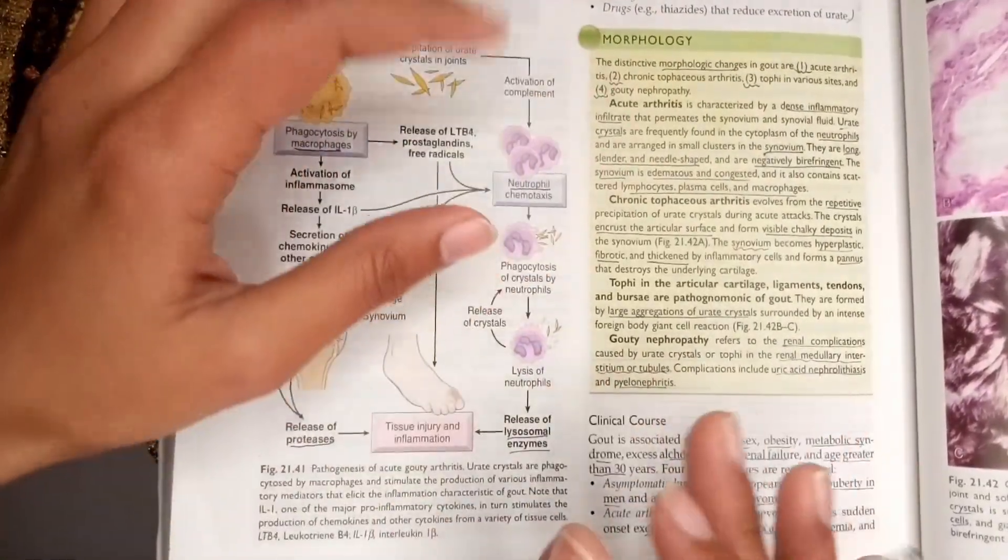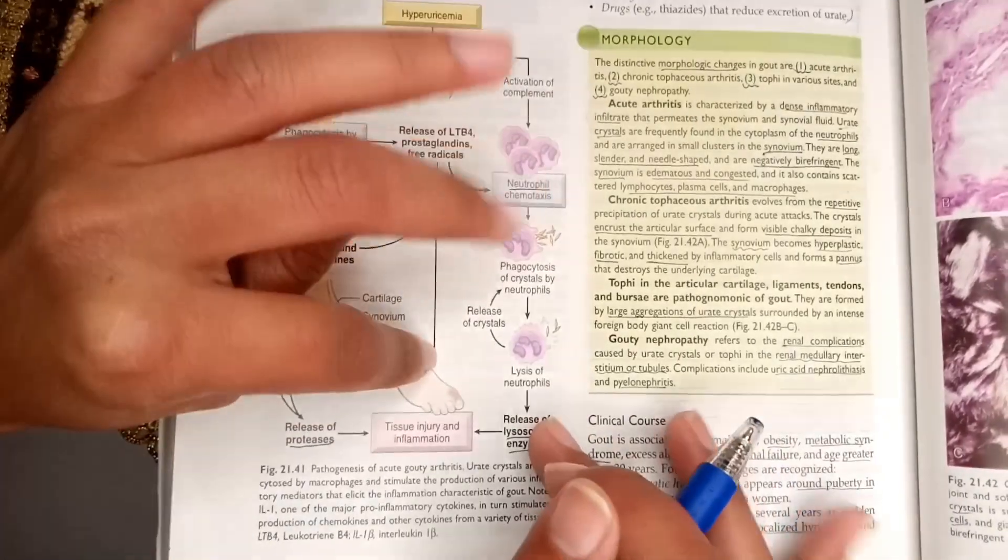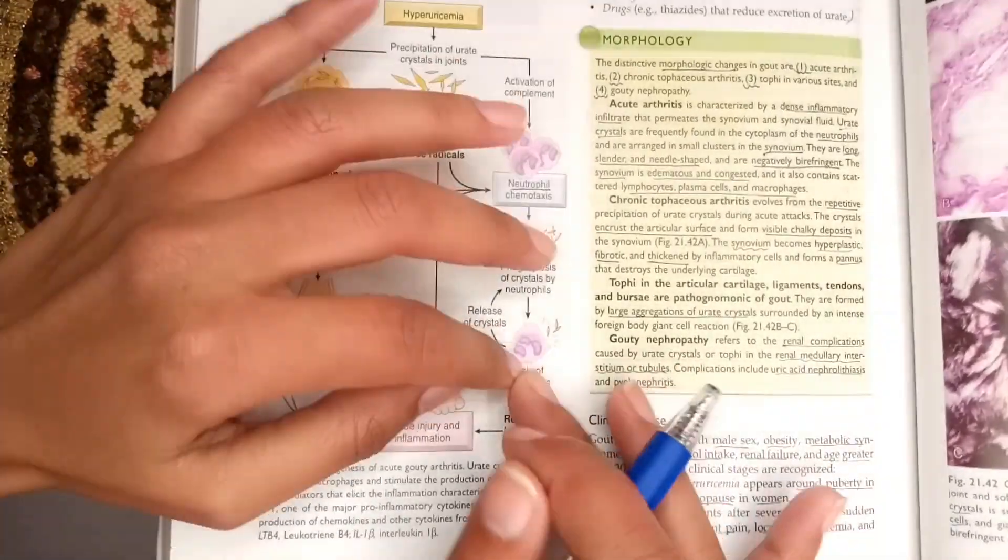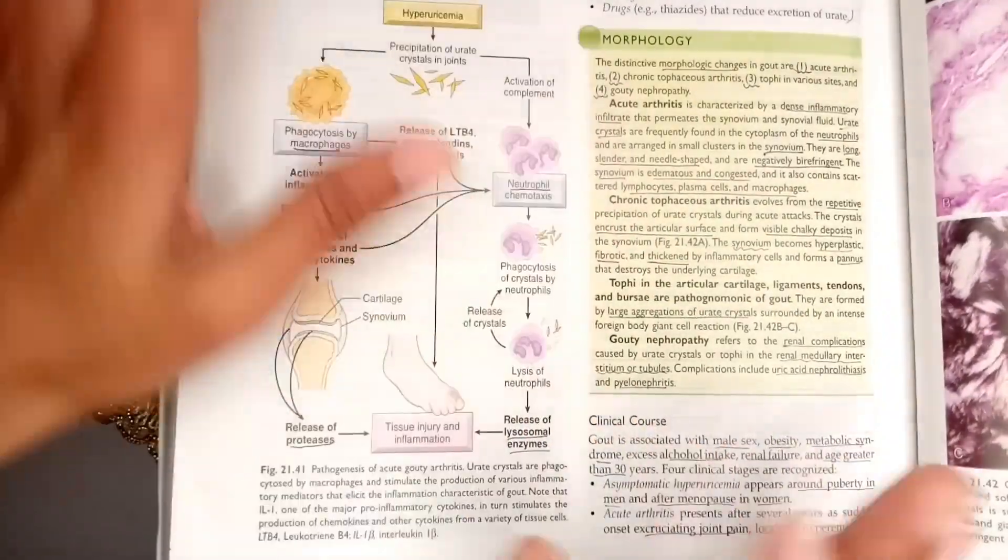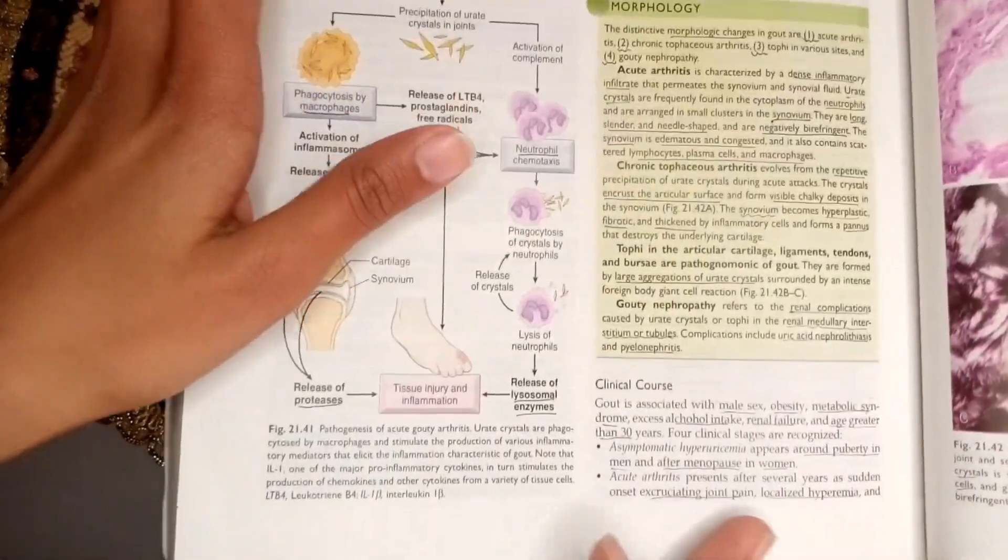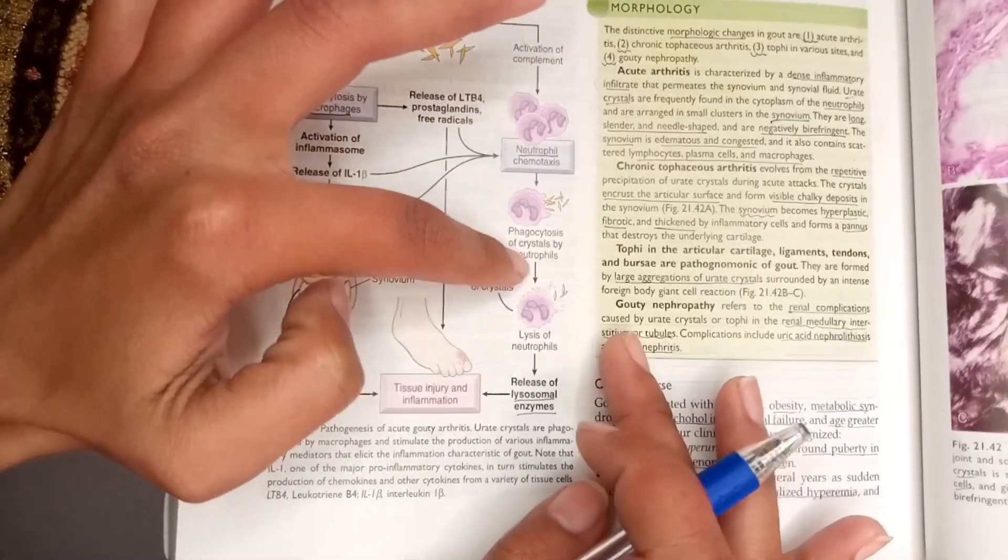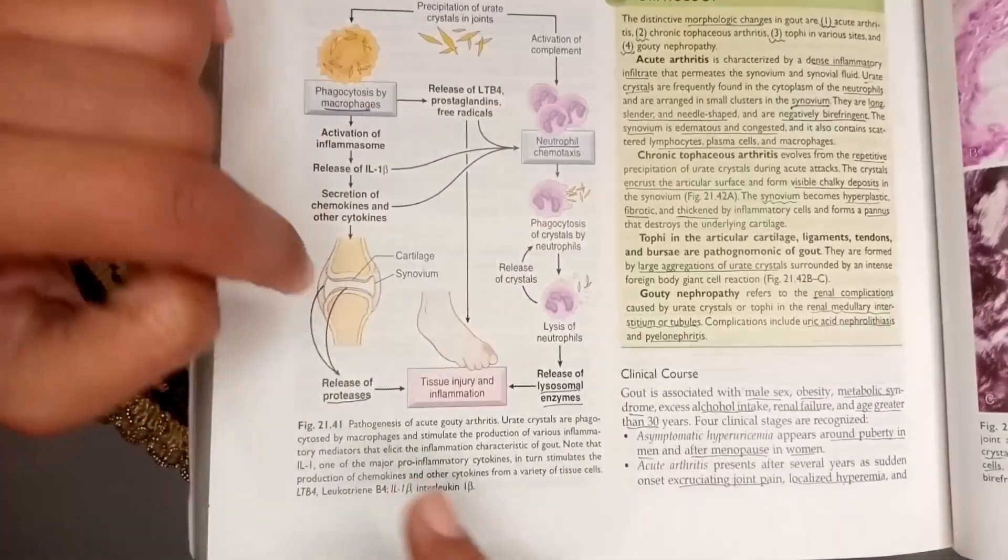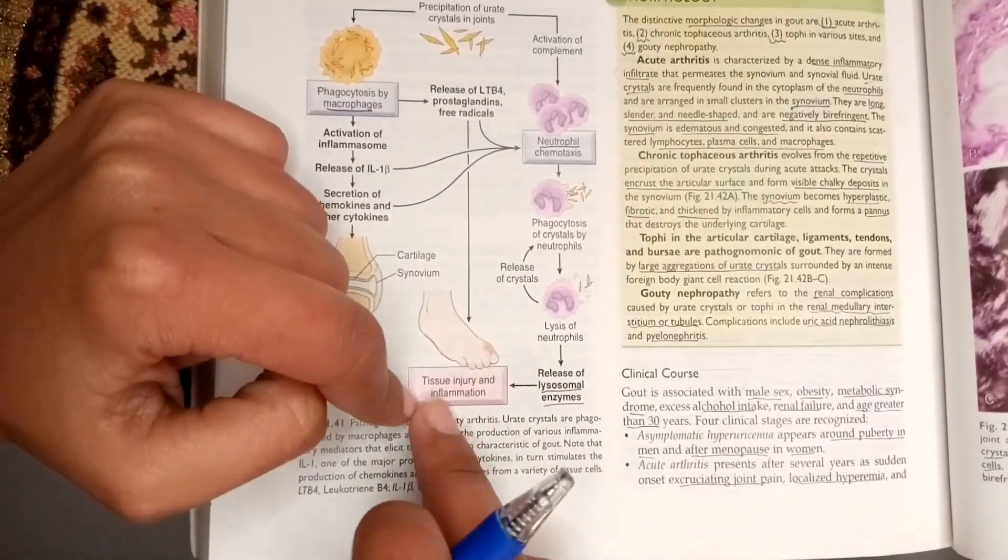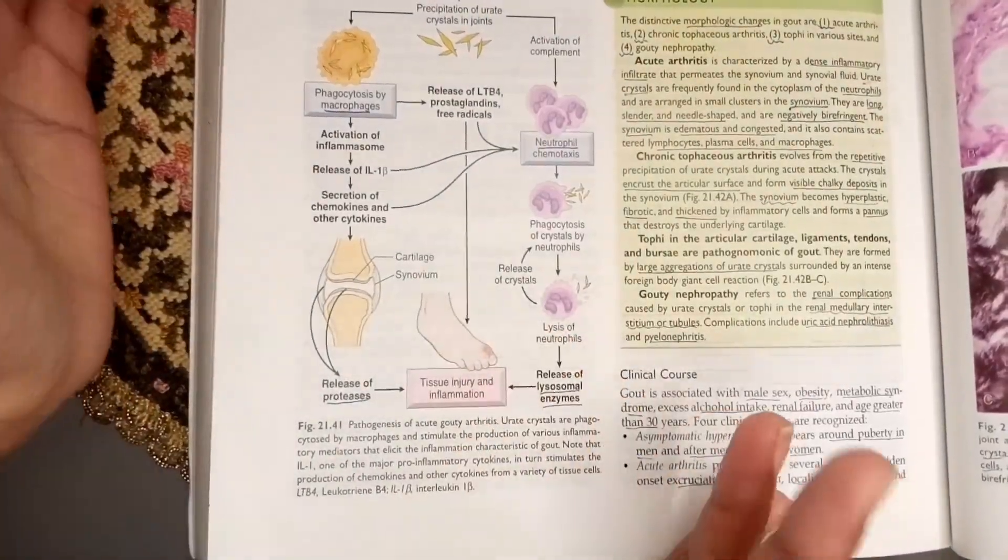When the neutrophils phagocytose the crystals, the crystals cause lysis of the neutrophils, releasing the crystals back to the site. The lysis of neutrophils also releases lysosomal enzymes, which are responsible for tissue injury and inflammation.